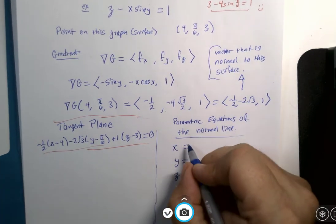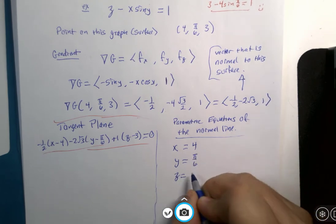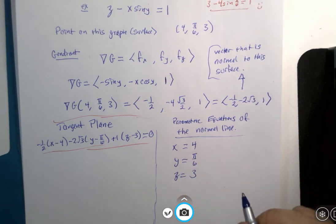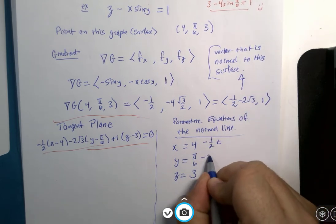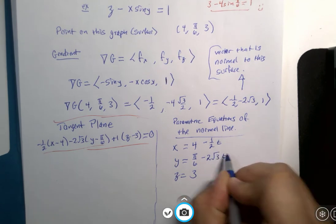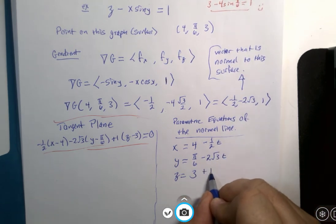I've got coordinates 4, π/6, and 3. And I have a normal vector, minus 1/2 t, minus 2√3 t, plus 1 t.